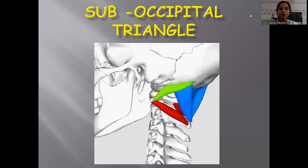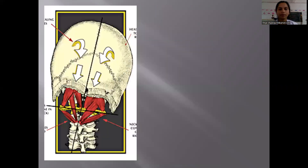Good morning to all. Today we are going to discuss about the sub-occipital triangle. As you can see in the picture, this is the triangle on either side which is called as sub-occipital triangles.